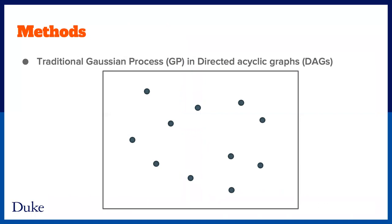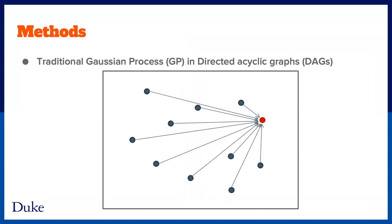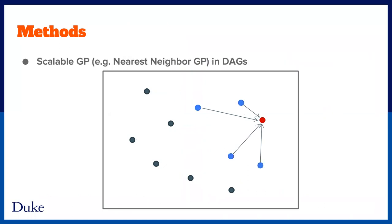One of the go-to methods is traditional spatial Gaussian processes. Let's imagine these are spatial locations in a dataset. For each point, the traditional GP assumes the full conditional dependence from the rest. The red point receives a directed edge from every other point, which makes it computationally expensive. Some scalable GP methods, such as NNGP, use only a few points that are closest to the red point to ease computational burden, not losing much accuracy in prediction.